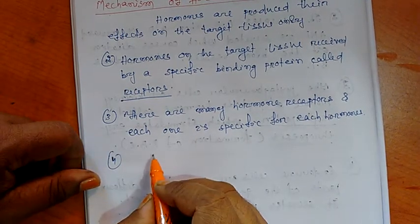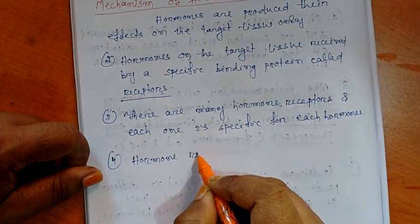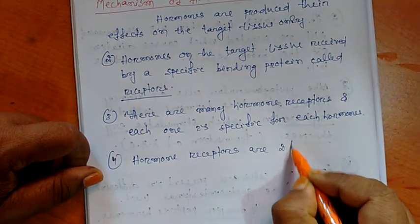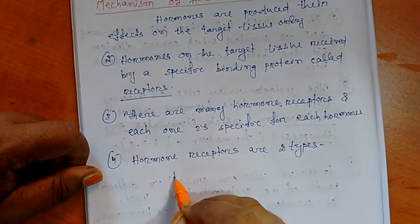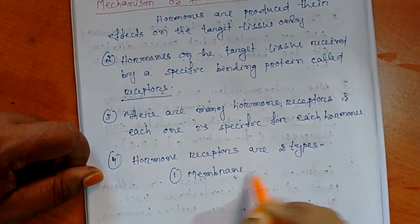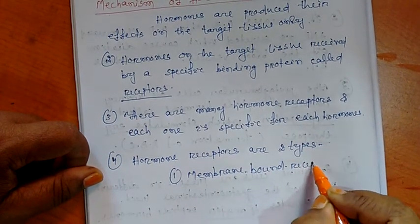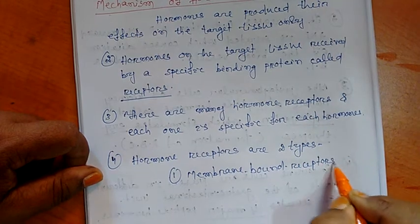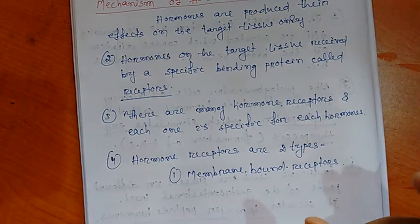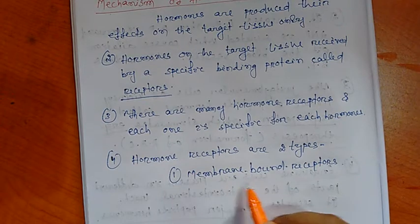Hormone receptors are of two types. One is membrane-bound receptors, which I have shown in the diagram. Follicle-stimulating hormone forms a receptor complex present in the cell membrane of the ovary. That is membrane-bound receptors.